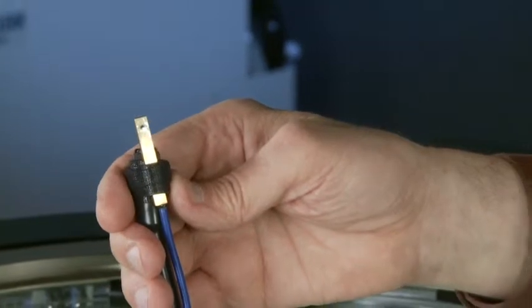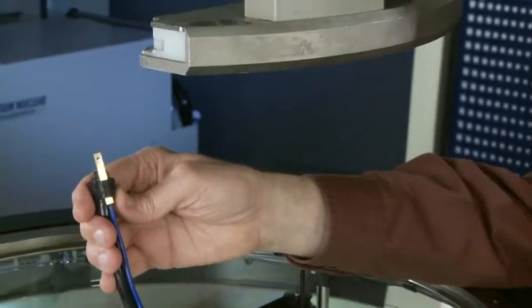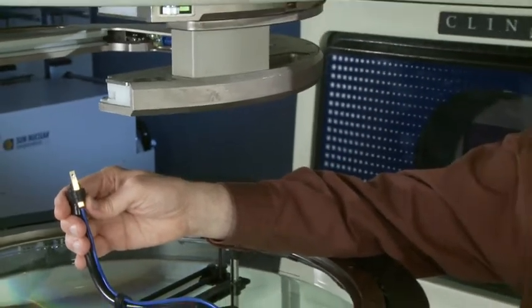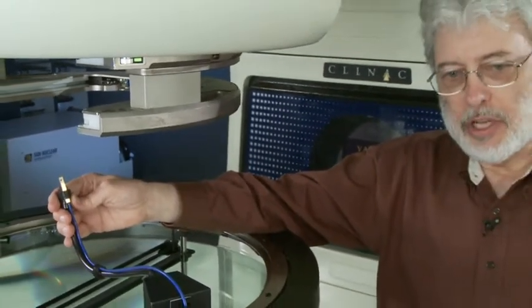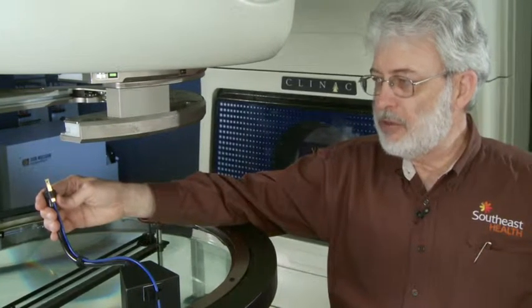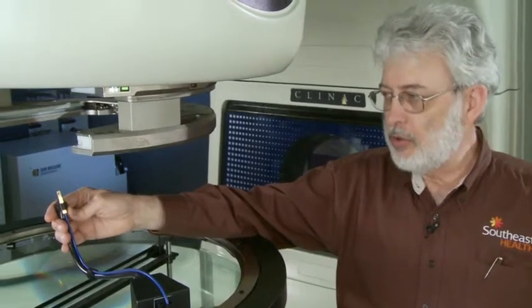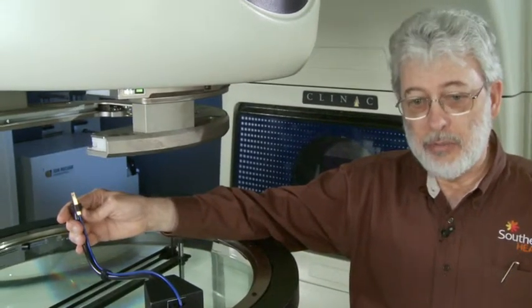One of the detectors I use for stereotactic measurements is this edge detector that's made and sold by Sun Nuclear. It's a diode detector that's energy compensated that will provide measurements for field sizes up to a 10 by 10 including depth dose that match the measurements from ion chamber.